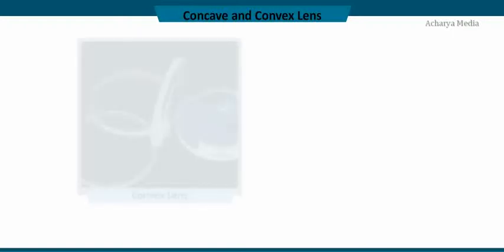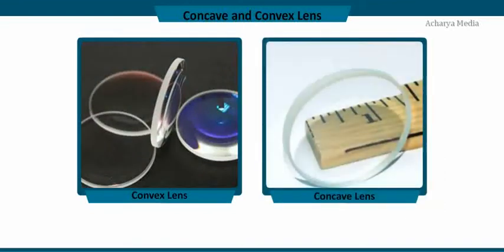In this discussion, let us focus on the lenses which have identical surfaces and are very thin. They are convex lens and concave lens. Convex lens is thick in the middle and thin at the edges, whereas concave lens is thin at the middle and thick at the edges.